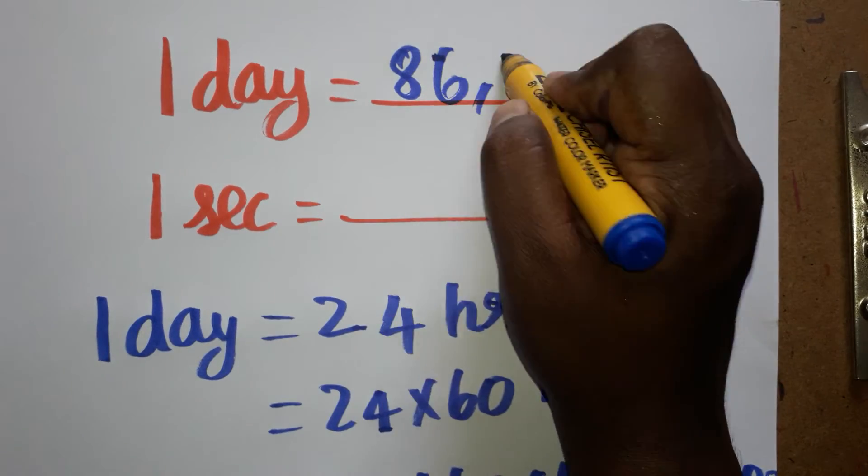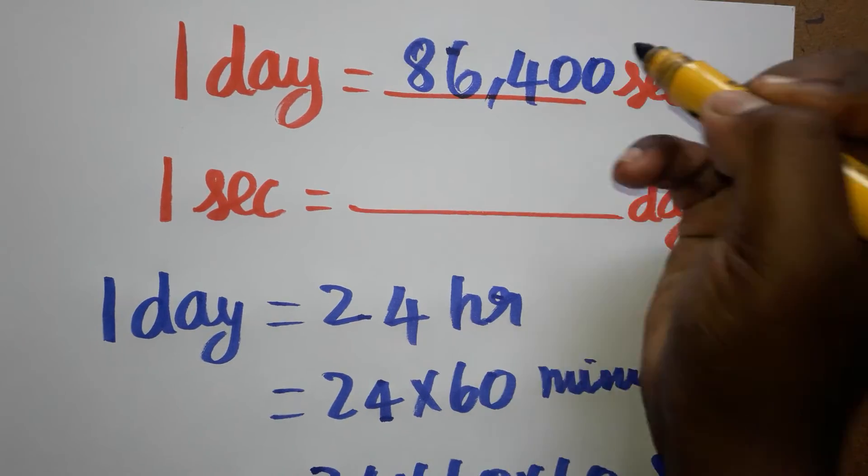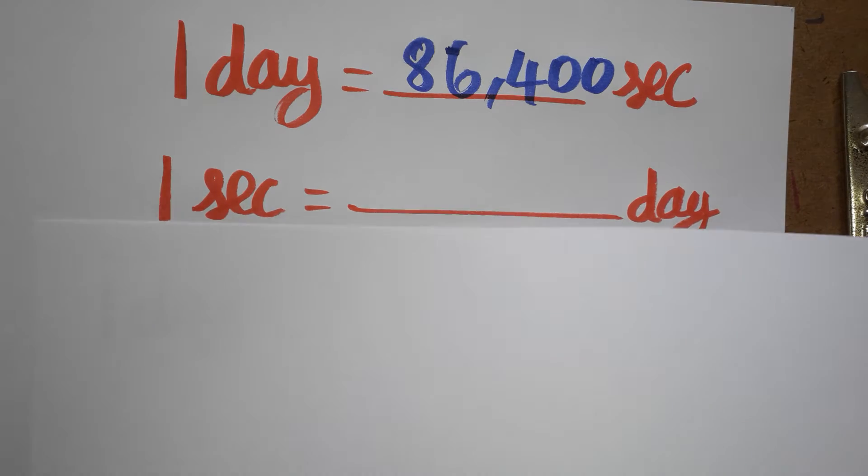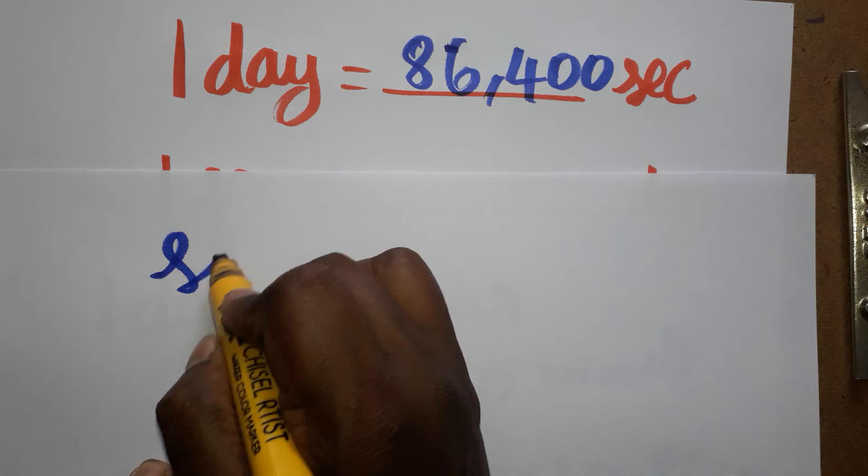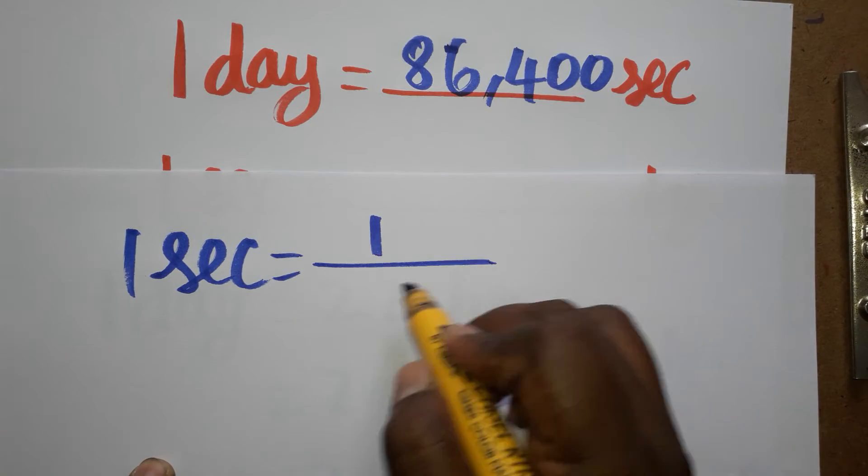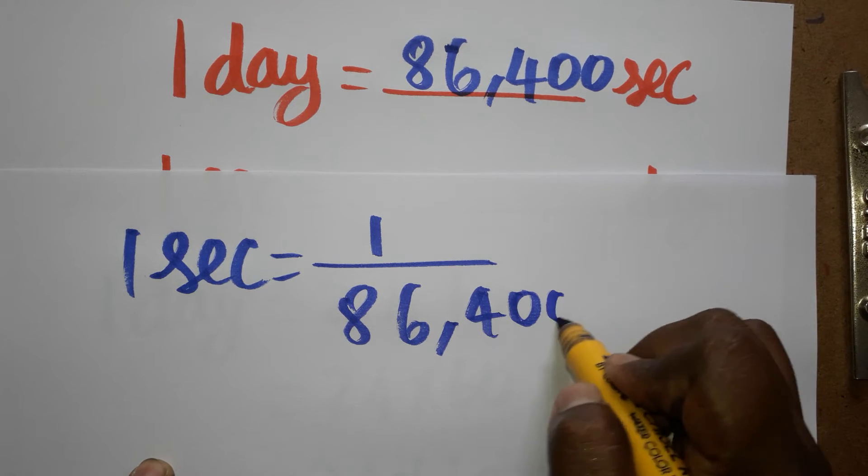Now the opposite: one second is equal to dash day. So one second is equal to dash days. This you can bring in the denominator, 1 divided by 86,400 day.